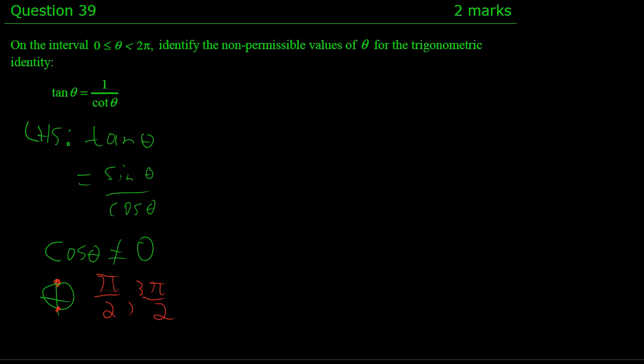I think we should also consider the right-hand side. The right-hand side is 1 over cot θ, which is 1 over cos θ over sin θ.